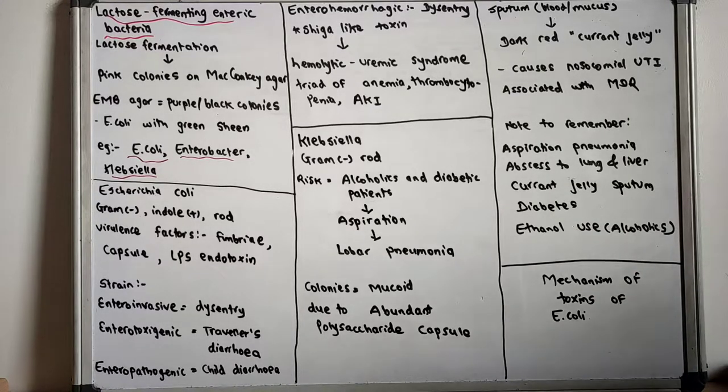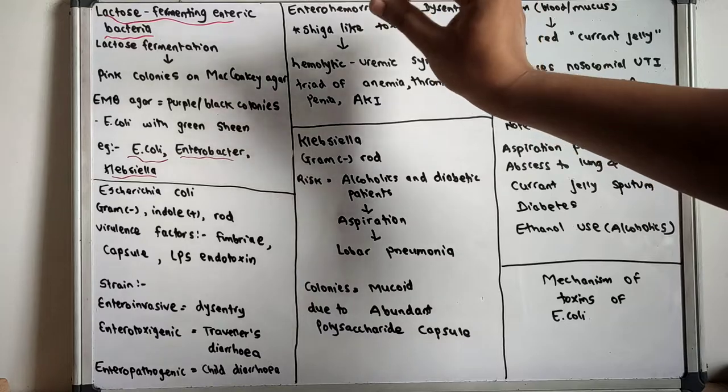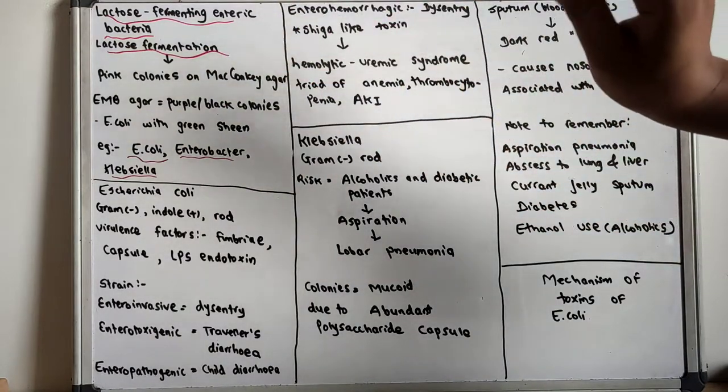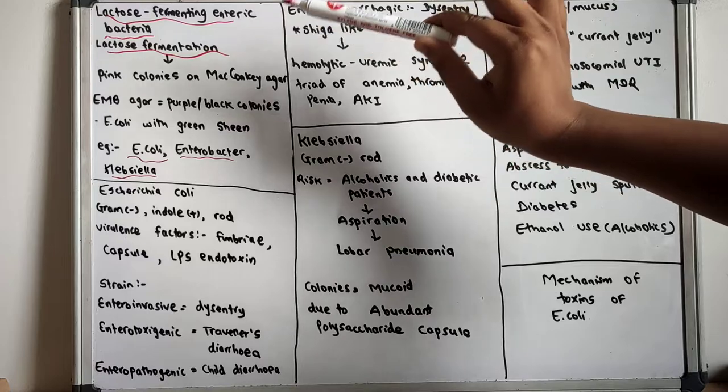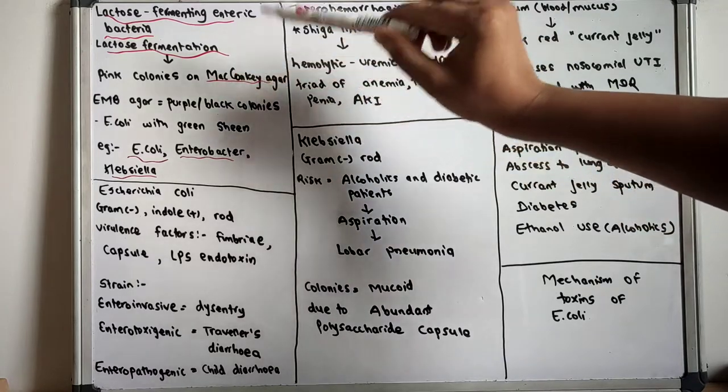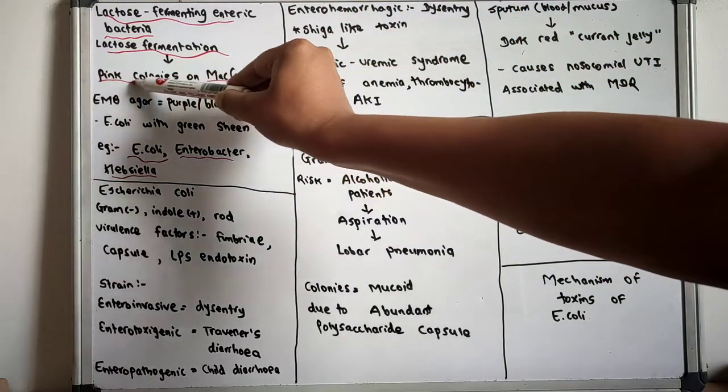The lactose-fermenting enteric bacteria ferment lactose, thus they can be grown on MacConkey agar and their colonies appear pink.